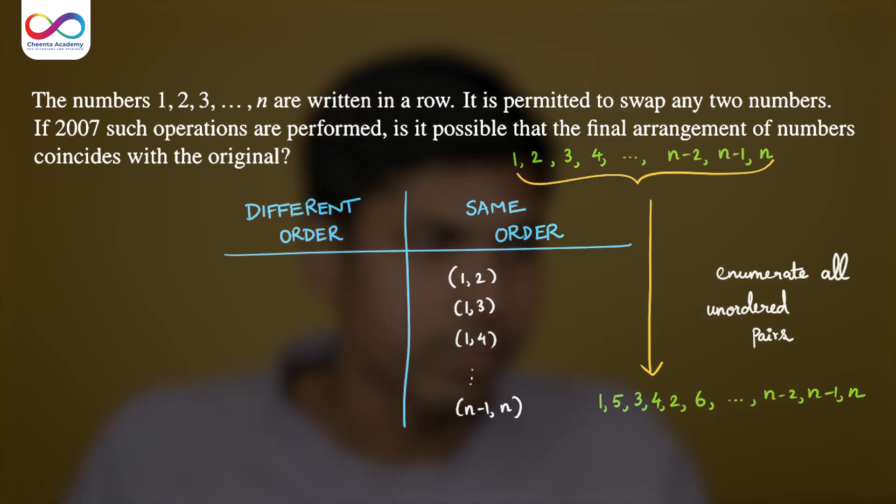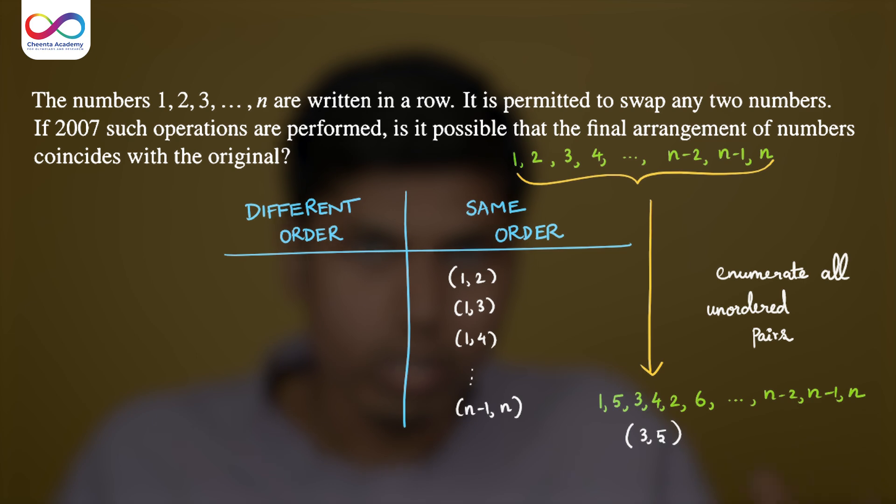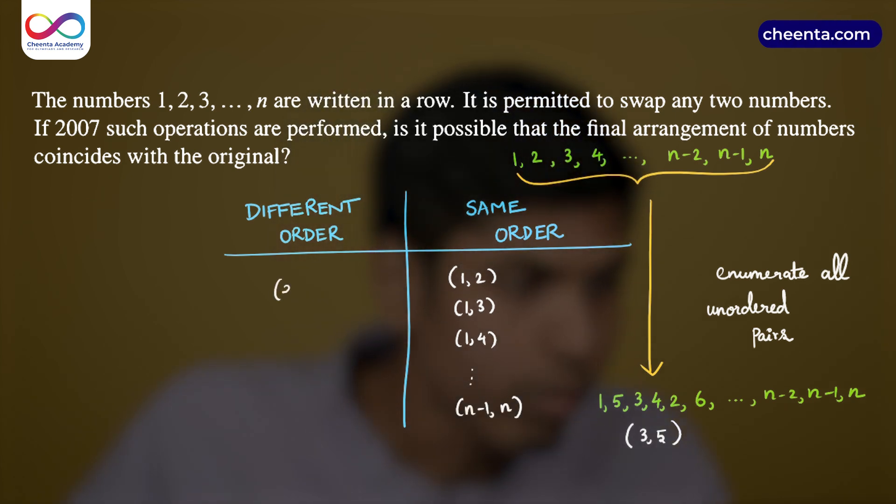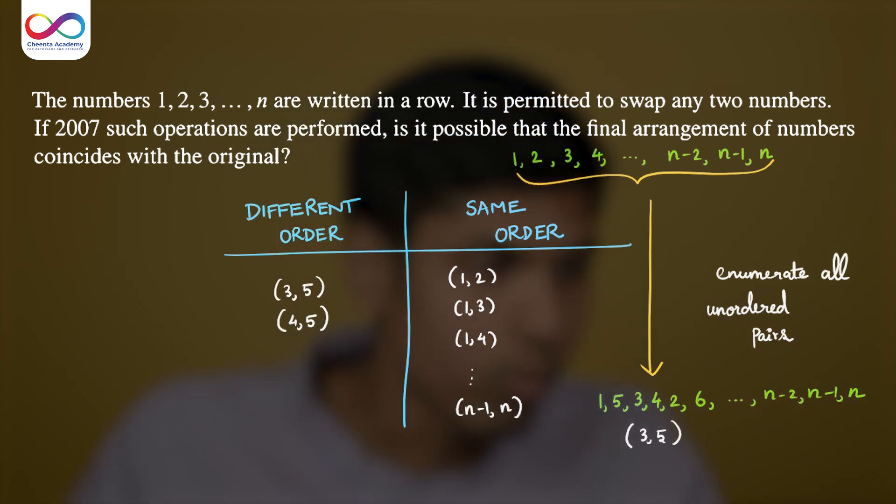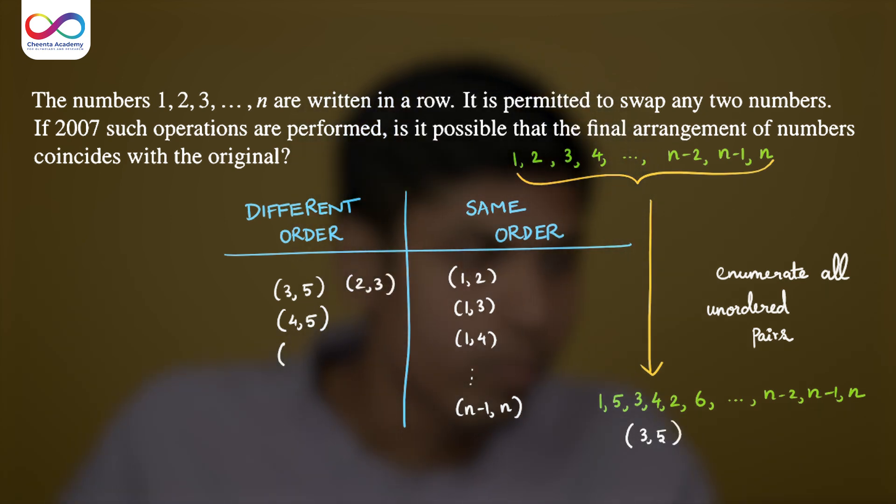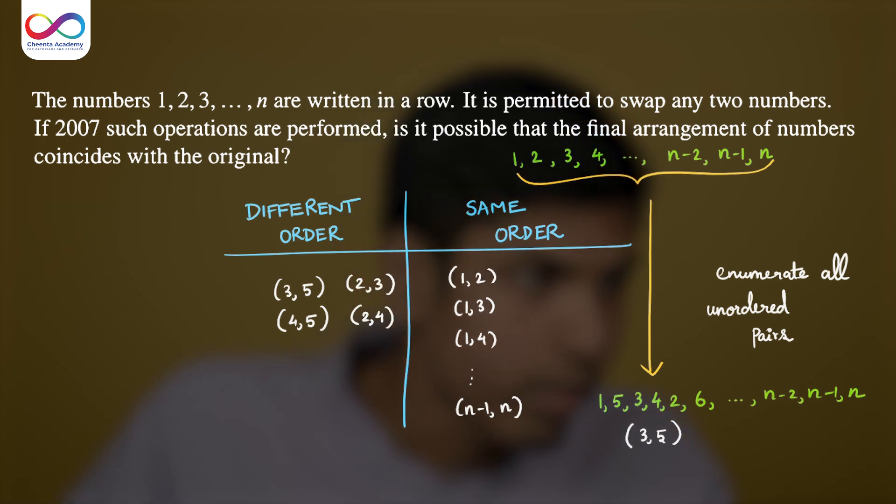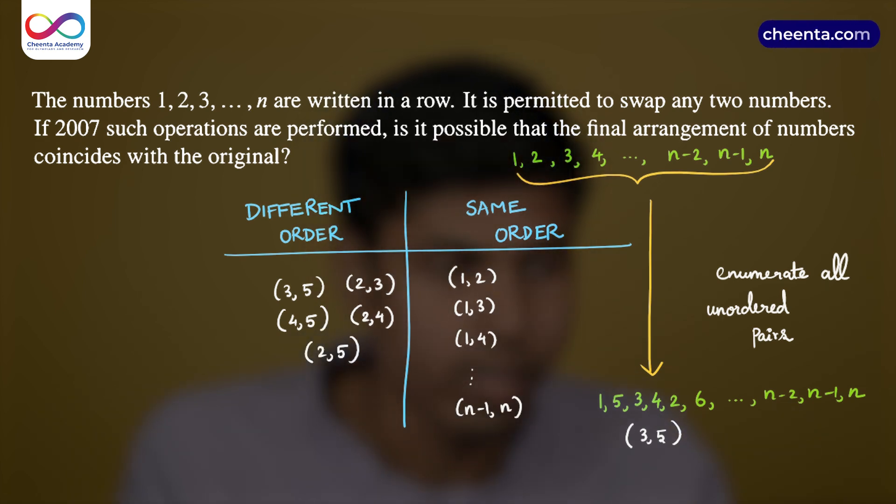Clearly not all pairs have the same order. For example, the pair 3, 5 is not anymore in the same order. 5 occurs before 3. So let's move it to the first column named a different order. So you get 3, 5 here. Not only that, you get also 4, 5 because 5 occurs before 4, but in the previous setting we had 4 before 5. We will also have 2, 3 because 3 occurs before 2 and also 2, 4. And we will also have 2, 5 because 5 occurs before 2. And that's it. These are the only unordered pairs that are going to be listed in the different order column. All the other pairs will occur in the same order column.